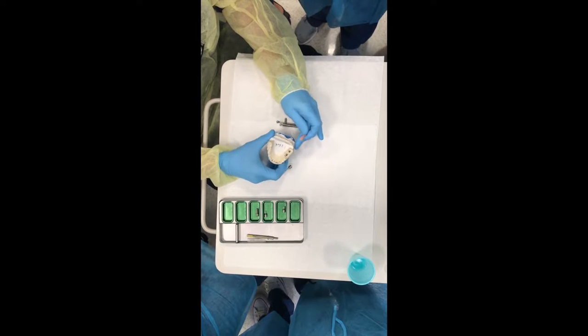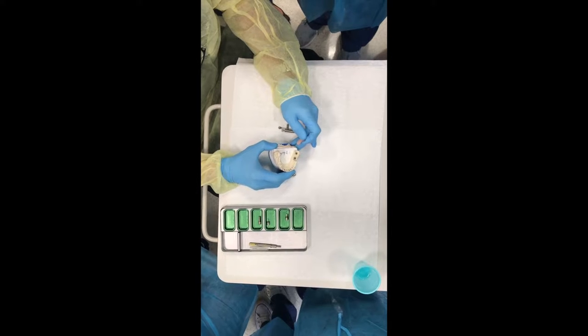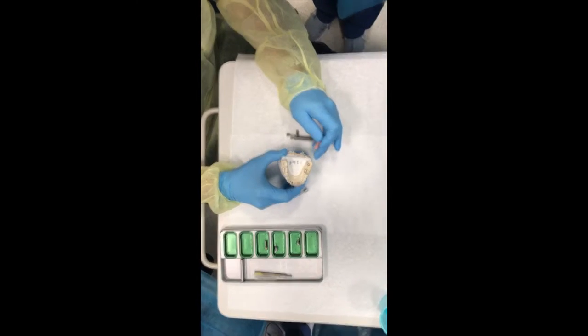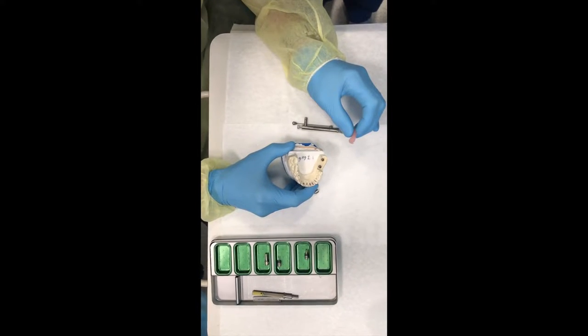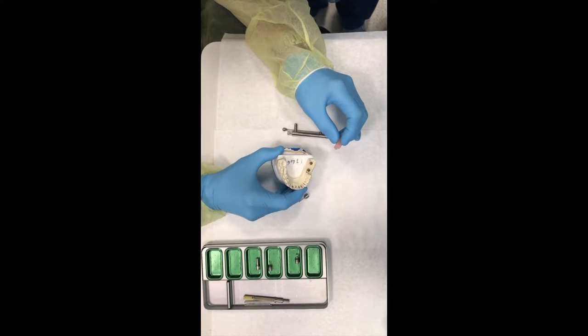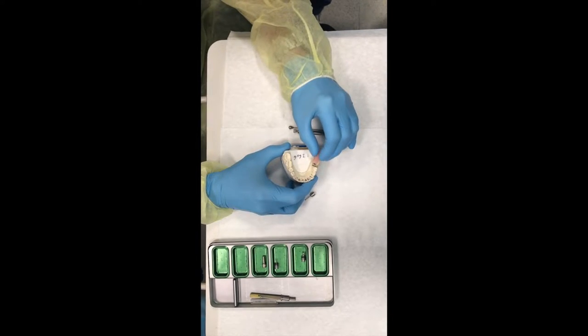You can see the soft tissue on top. You can pull the soft tissue away. You can see what I call the lab fixture analogs, sometimes called the implant replicas. And Straumann has a color-coded system, so you'll see a purple stripe to designate that this would be called an RC implant versus an NC implant.